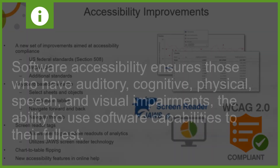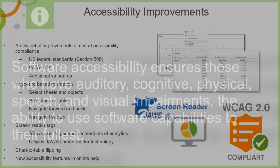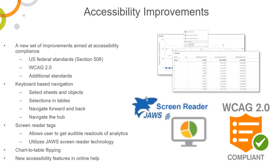Software accessibility ensures those who have auditory, cognitive, physical, speech, and visual impairments the ability to use software capabilities to their fullest. Qlik has taken necessary steps by adding a number of accessibility features to ensure Qlik Sense is compliant with WCAG 2.0 standards.